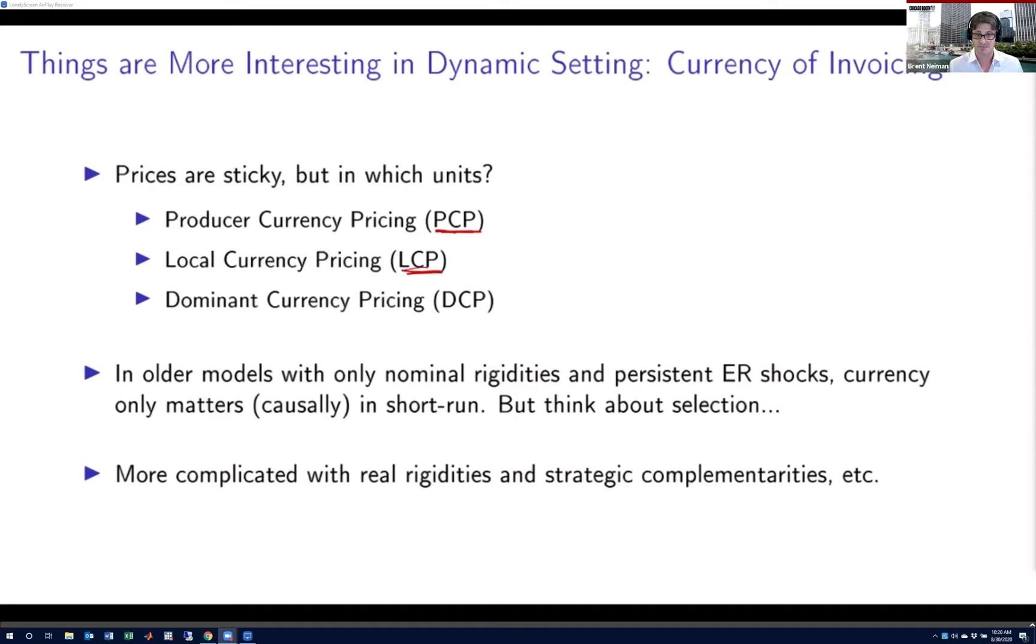Then finally, there's been a lot of recent work, particularly by Gita Gopinath and co-authors, describing dominant currency pricing, the idea that maybe a dominant currency—in this case they have in mind the U.S. dollar—is what most goods are invoiced in. And then it's an intermediate range, right? It's not just zero or one, it sort of depends on how that country's bilateral exchange rate with the dollar moves.